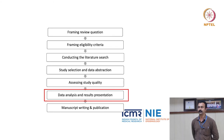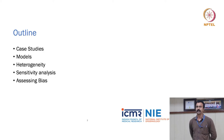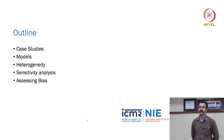Looking at the life cycle of systematic review and meta-analysis, we are in the process of data analysis and results presentation — we are in this segment. I'm going to present the total idea of the statistical aspect under the following headings: three case studies, models, heterogeneity and sensitivity analysis, and then assessing bias. These are the points I'm going to concentrate on in this presentation.